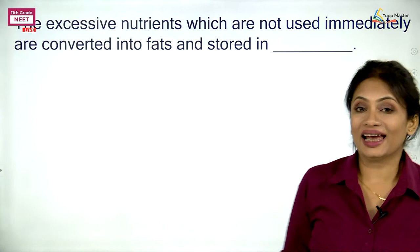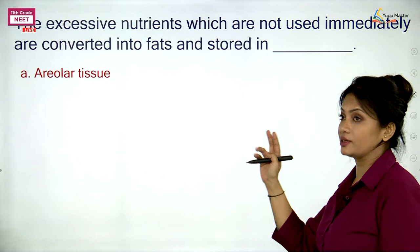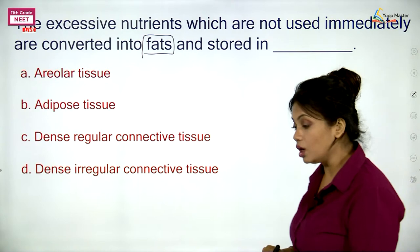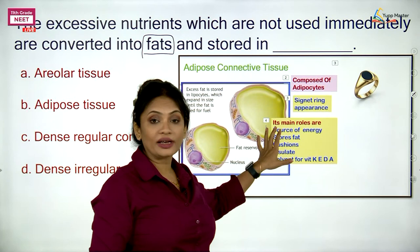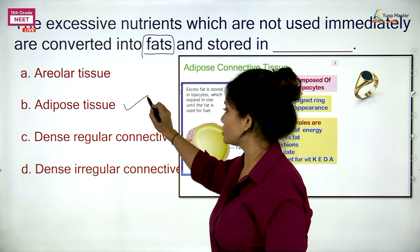Next question: excessive nutrients which are not used immediately are converted to fats and stored in — is it areolar tissue, adipose tissue, dense regular, or dense irregular? Remember, the functions of adipose tissue include being a source of energy, storing fats, cushioning, insulating, and acting as a solvent for fat-soluble vitamins. The correct answer is adipose tissue.